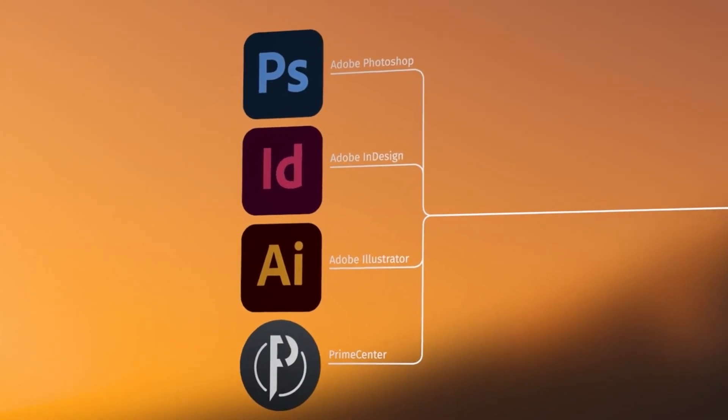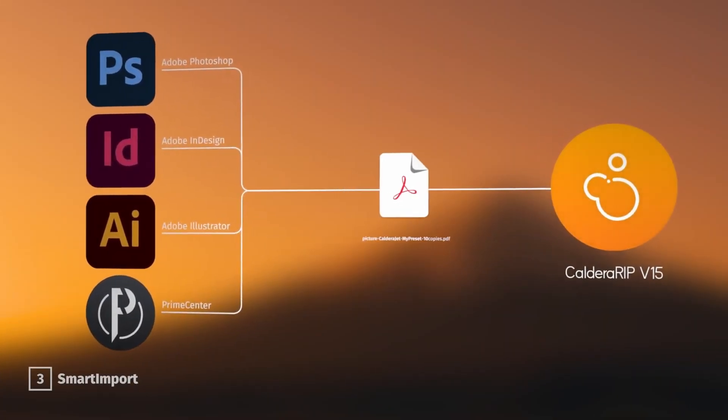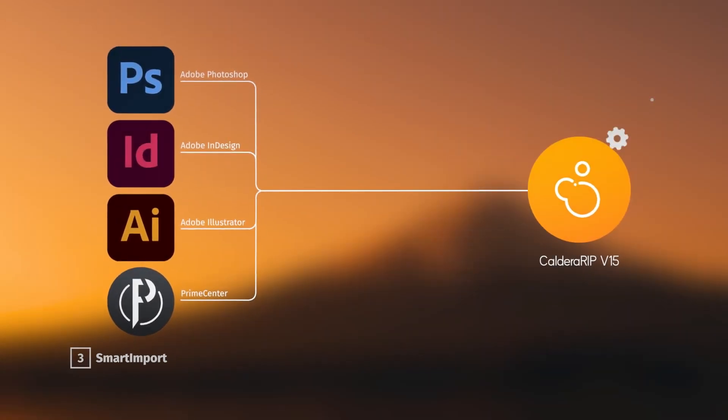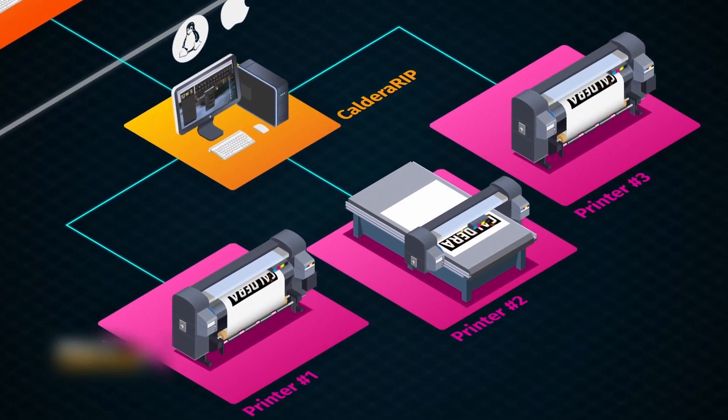Before getting into the details, let's check what Raster Image Processor or RIP means. RIP is a processing tool that can rasterize or convert computer vector files from InDesign, Illustrator, Photoshop, PDF, JPGs, etc. to a raster image, also known as a bitmap, that is composed out of a matrix of dots that the printer can understand and print.